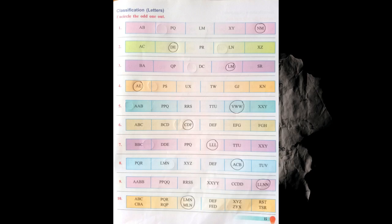Now eight: PQR, LMM, XYZ, DEF, ACB and TUV. ACB is the odd one because all the other groups have consecutive letters — P Q R, X Y Z, D E F, T U V — but in ACB the letters are not in consecutive order, making it the odd one.